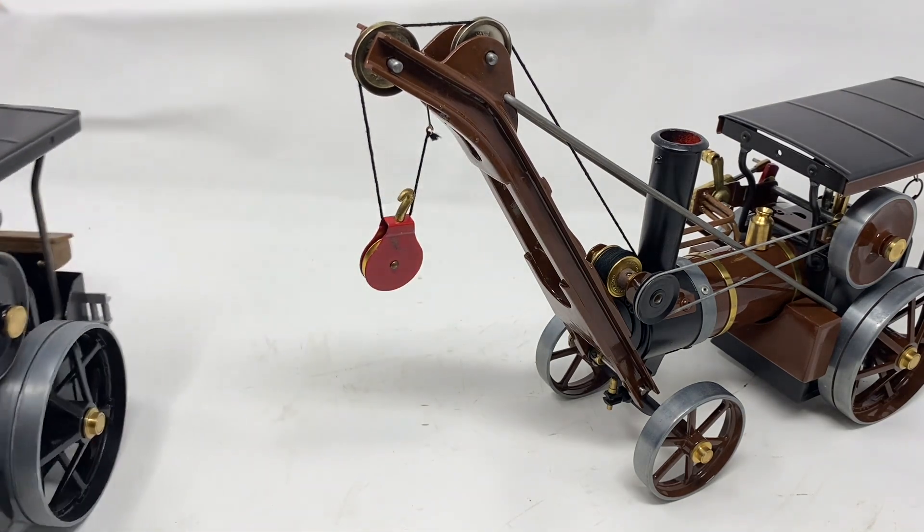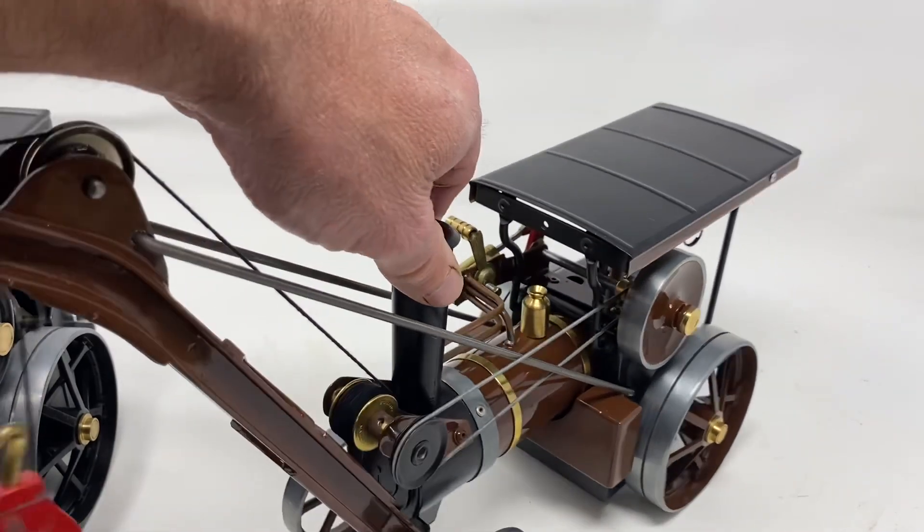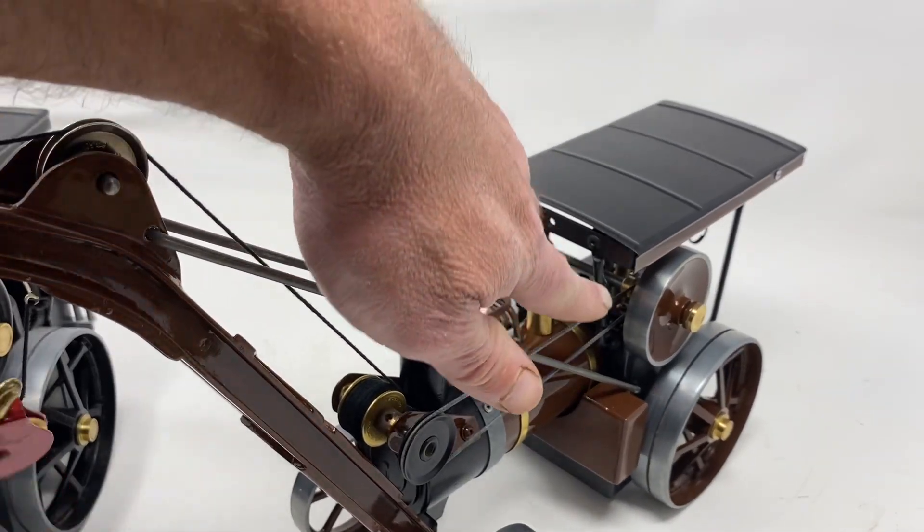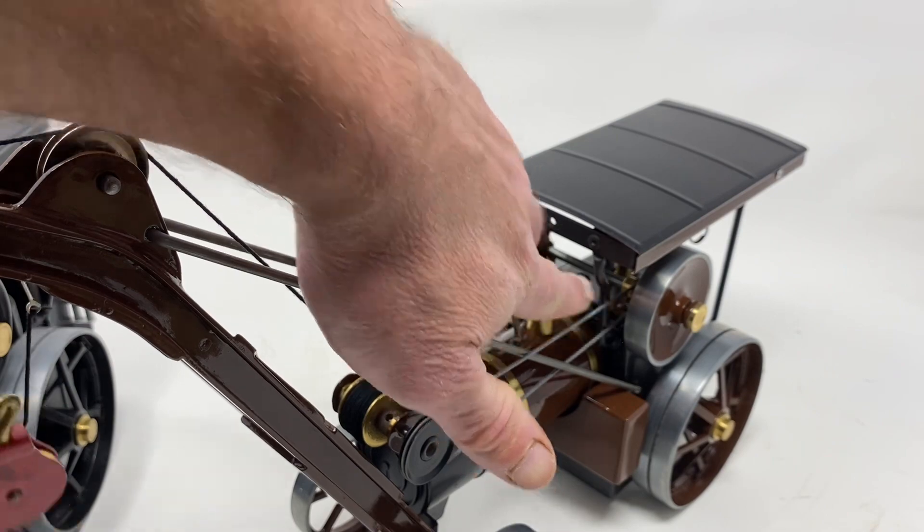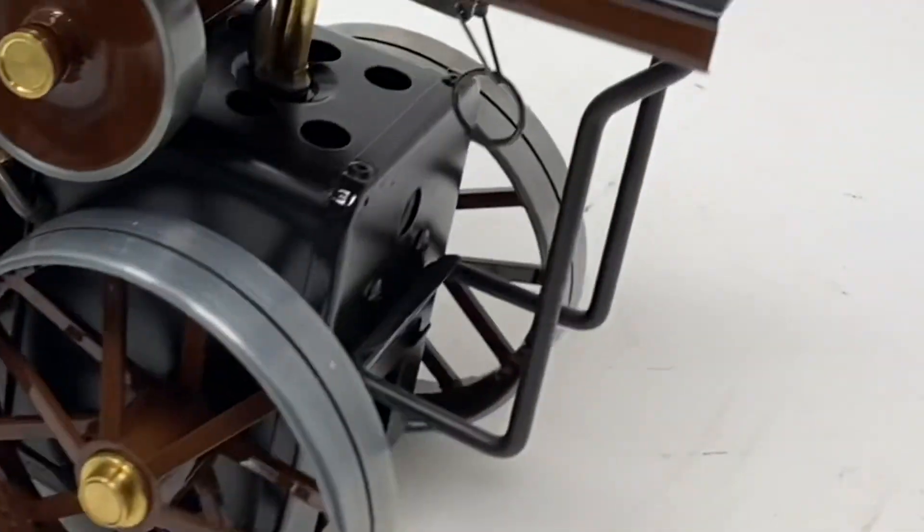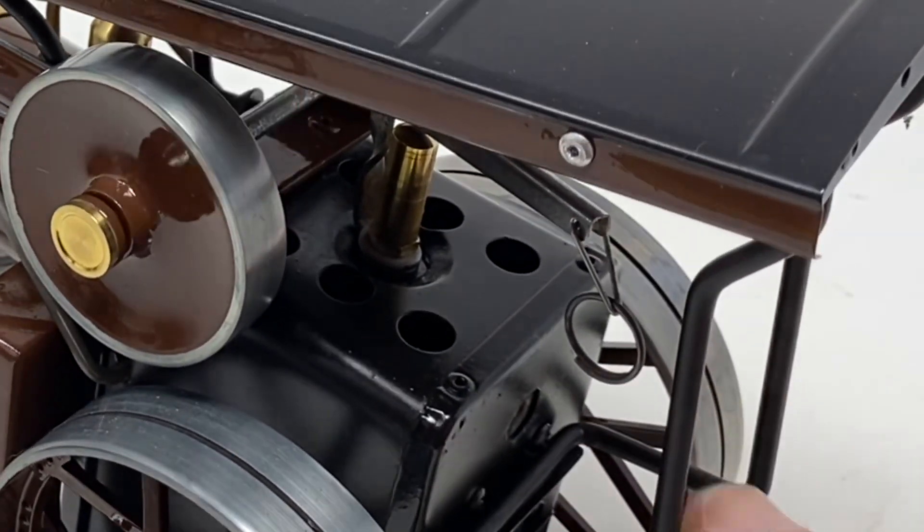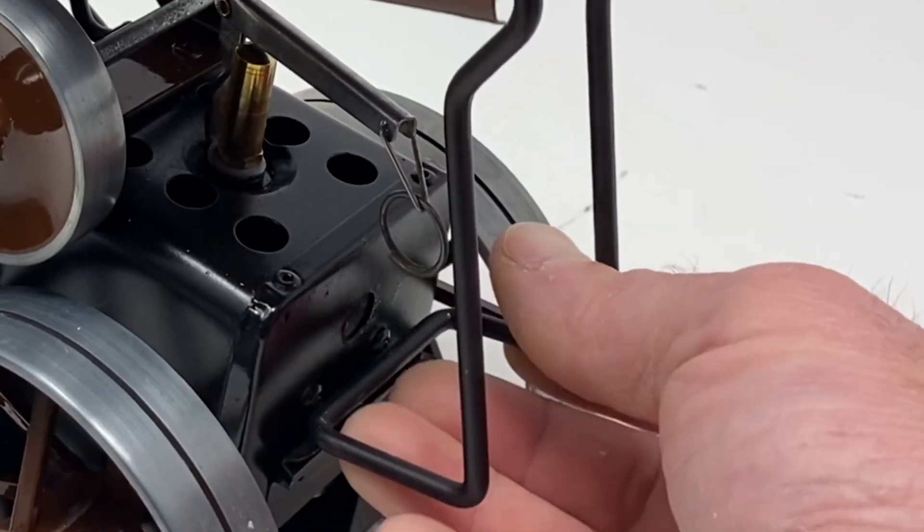We'll start with my first attempt, which is on my steam crane. Now this one I used an old Mamod canopy bracket which I cut the rear hoop out of, out of the back of the smoke box.